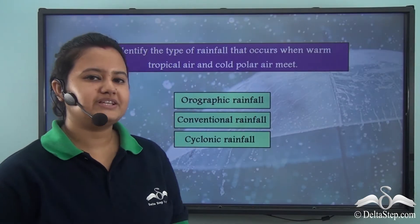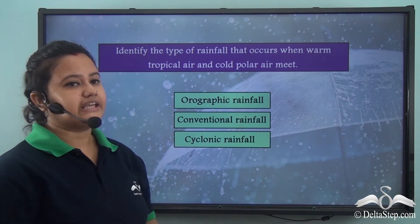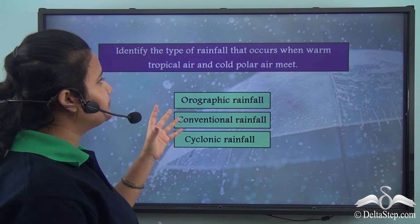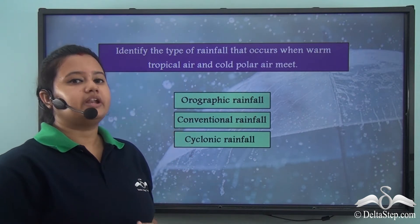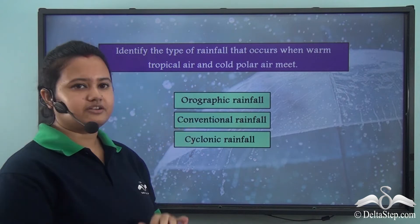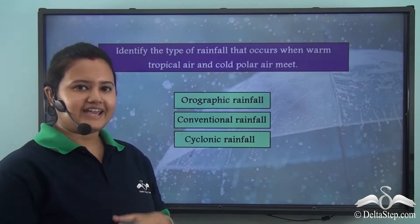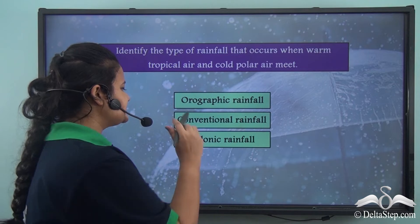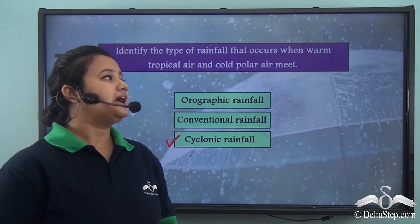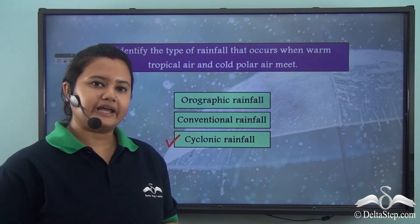Now let us answer this question: identify the type of rainfall that occurs when warm tropical air and cold polar air meet. Is it orographic rainfall, convectional rainfall, or cyclonic rainfall? The correct answer is cyclonic rainfall — it is the type that occurs when warm tropical air and cold polar air meet.